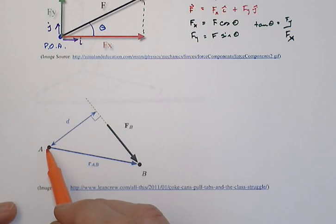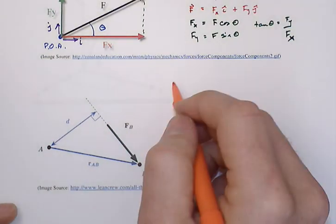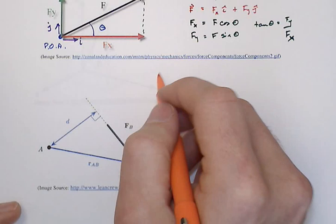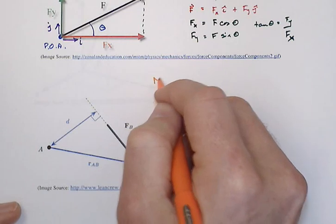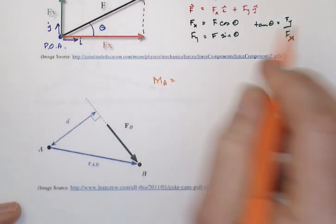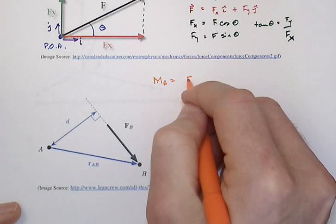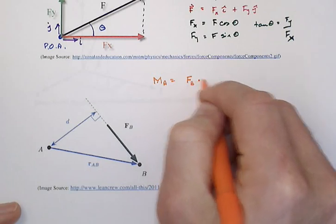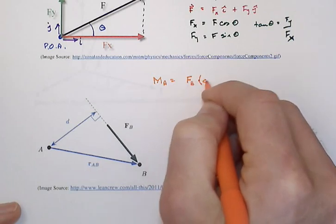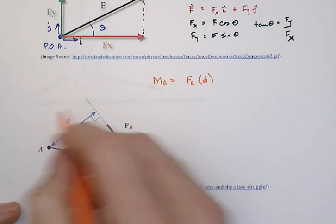And in 2D, the simple way to talk about that is just simply that the magnitude of the moment with respect to a is just equal to the force magnitude times the perpendicular distance, or what's oftentimes called the moment arm.